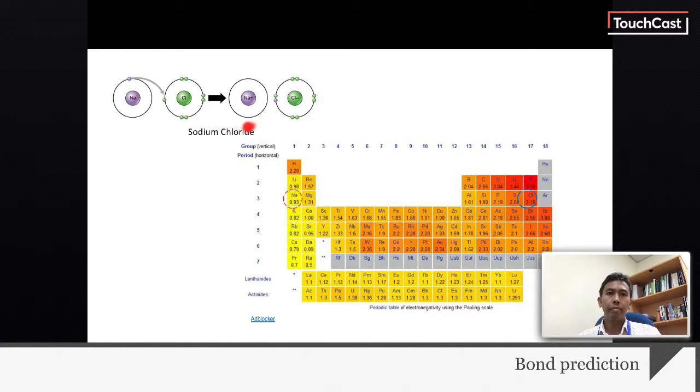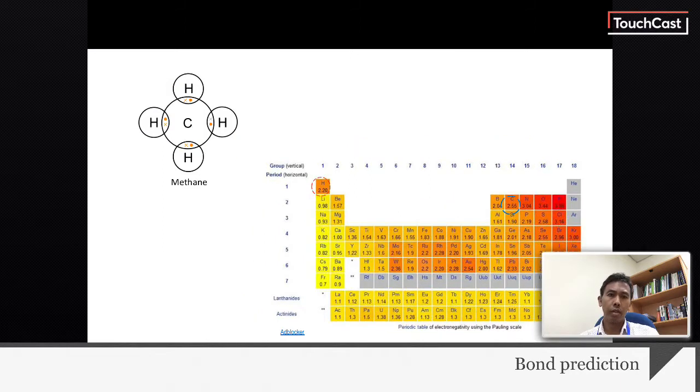Sodium chloride is ionic bonds. Sodium has low electronegativity, 0.93, and chlorine has high electronegativity, which is 3.16. Sodium chloride forms ionic bonds.